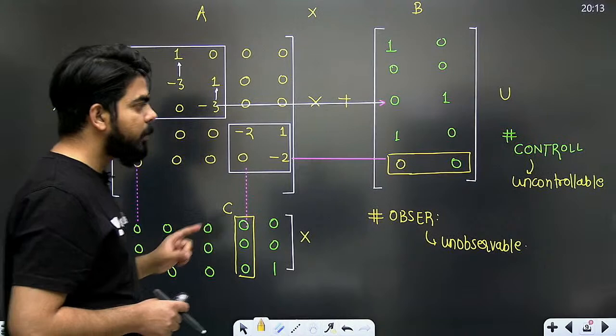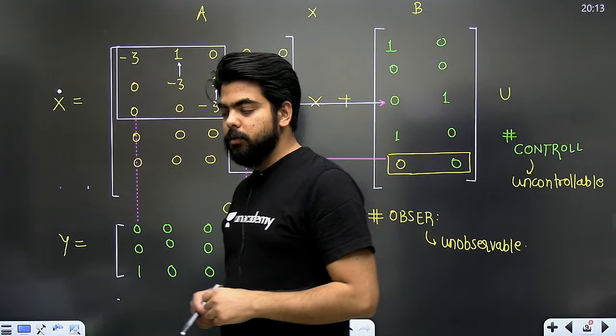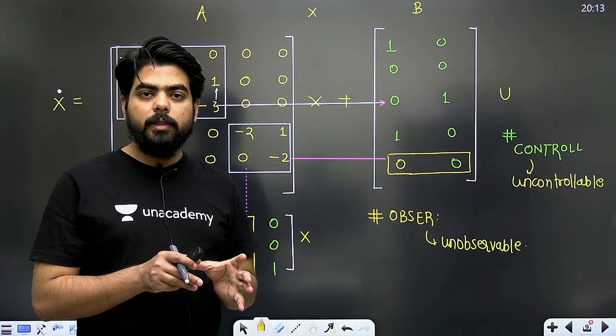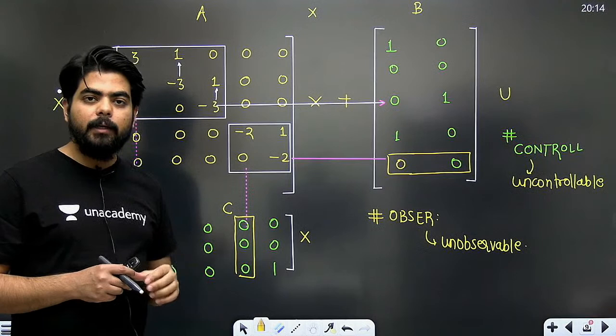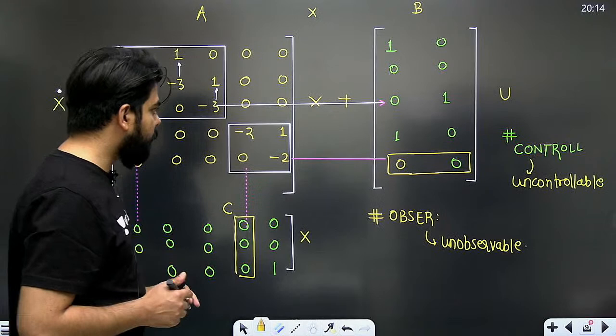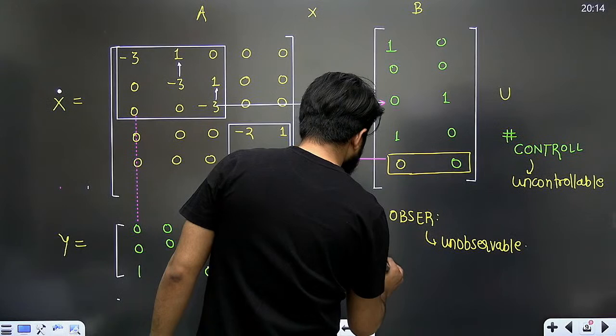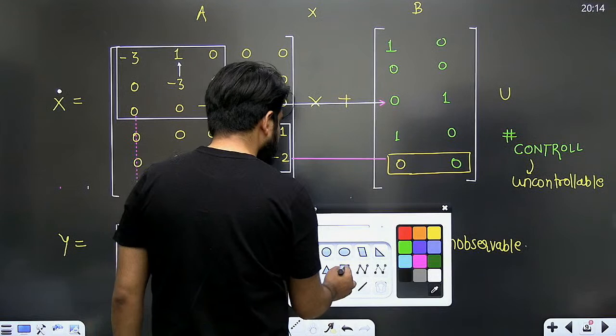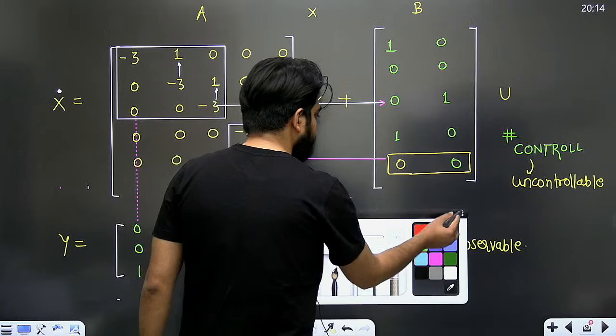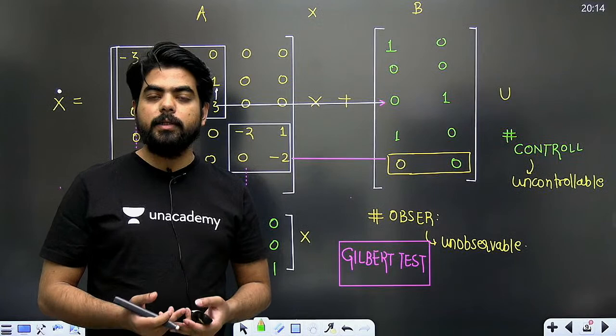तो ऐसा करके आप बहुत simple तरीके से controllability और observability निकाल सकते हो। आज के session में इतना ही - यह first part था। एक second part थोड़ी देर में हम लोग करेंगे, वहाँ कुछ GATE के questions भी practice करेंगे और कुछ other questions की भी discussion करेंगे, ताकि आप यह particular concept में कम से कम 2-3 questions में अच्छे लगें। इस test का एक बड़ा खास नाम होता है - this test is sometimes known as the Gilbert test।